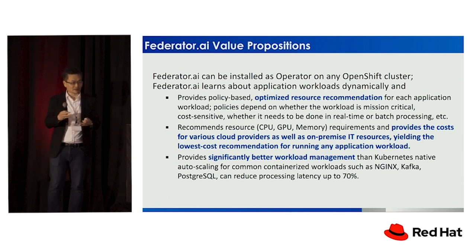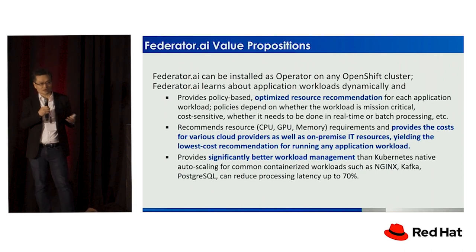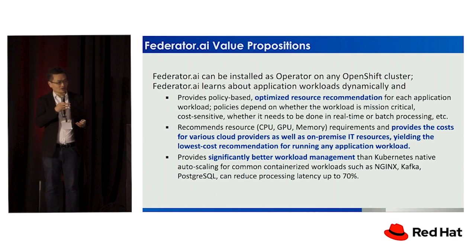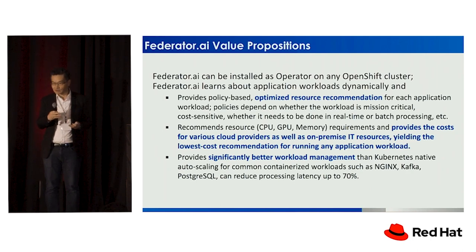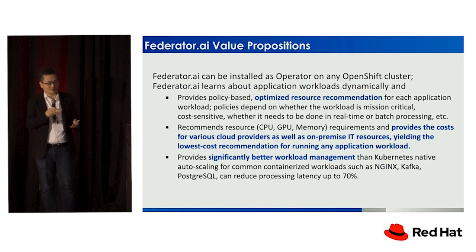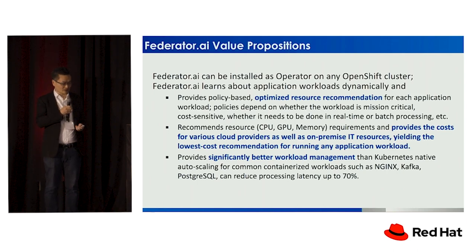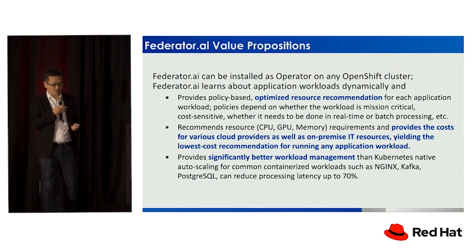The three big providers — Microsoft, Amazon, and Google — publish all costs on APIs. For very large customers they negotiate a certain rate, but for the remaining 95% of customers they use standardized costs. And we provide much better workload management than the native Kubernetes mechanism.